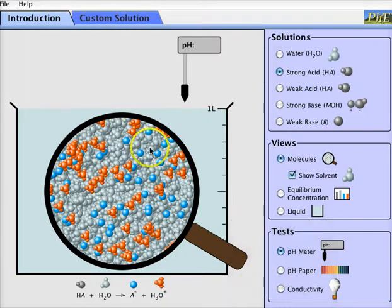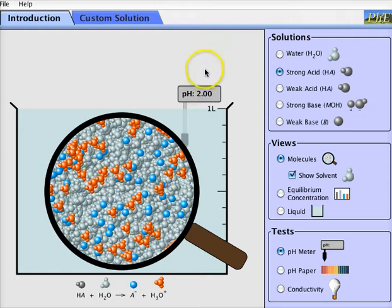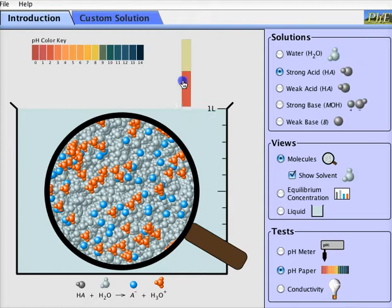Now let's take a look at strong acid. Strong acid here, represented by HA, H for hydrogen and A for the other part of the acid. The strong acid completely dissociates, breaks apart to form negative ions and hydrogen ions. We can see that in this picture, we cannot see any more of the acid left. It's completely dissociated. Strong acid, if we use the pH probe, pH of 2. If we use the pH paper, we can see that that also looks about right for a pH of 2.